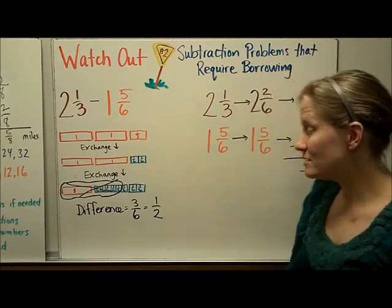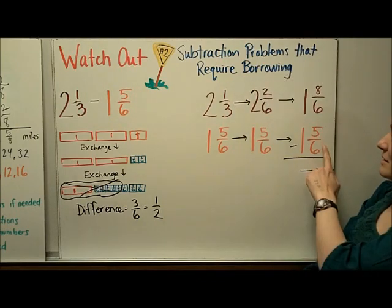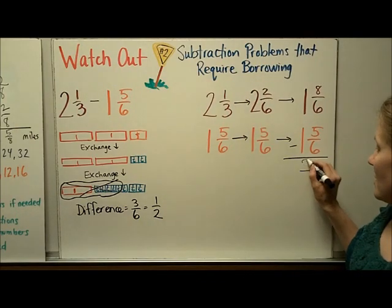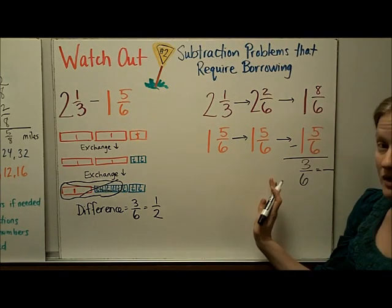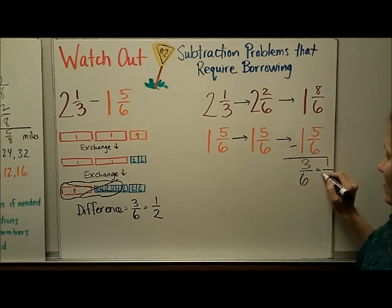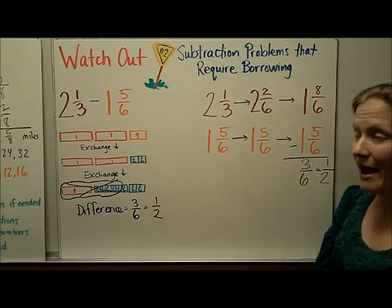And over here, I just did this subtraction problem. 8/6 minus 5/6 is 3/6. There is no whole number because 1 minus 1 is 0. And then we know that 3/6 simplifies to 1/2.